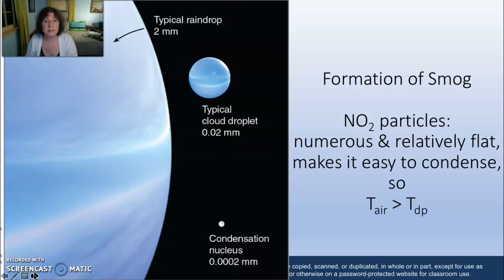Nitrous oxide particles, like they test for at the DMV, are perfect condensation nuclei. They are so good at attracting water droplets to them that you don't even have to meet the dew point temperature to start condensing on those nitrous oxide molecules and forming the smog that you know so well in LA.